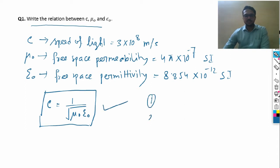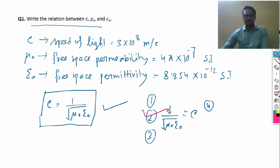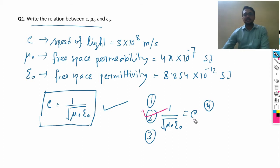Sometimes an MCQ may give four options, and one option will be 1/√(μ₀ε₀) = C. That is the correct option. This completes the first question.